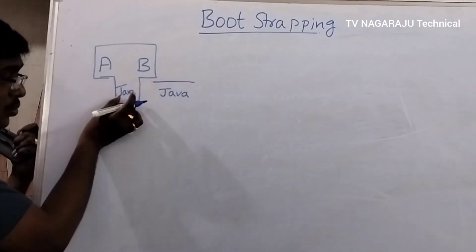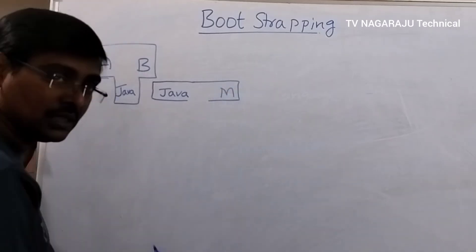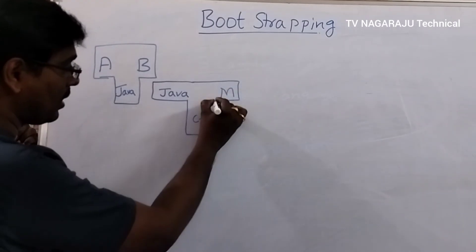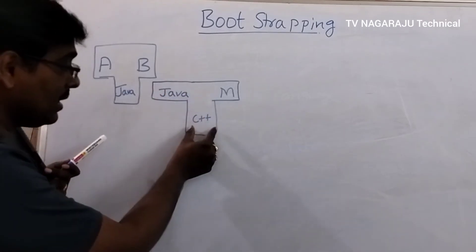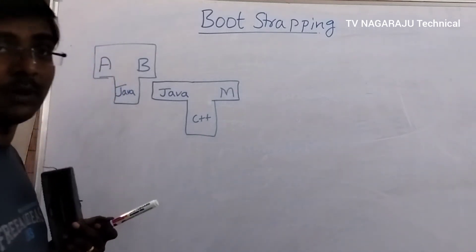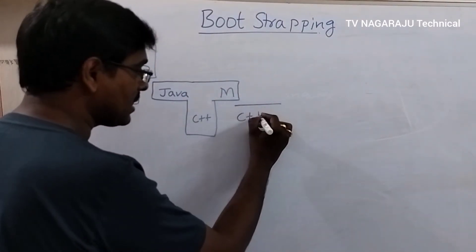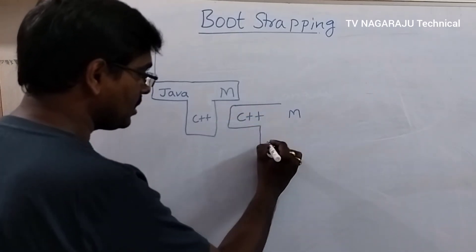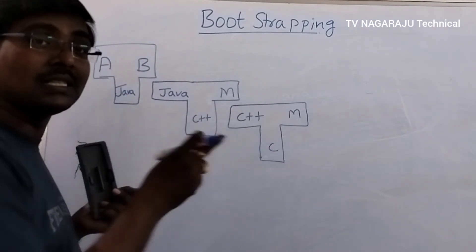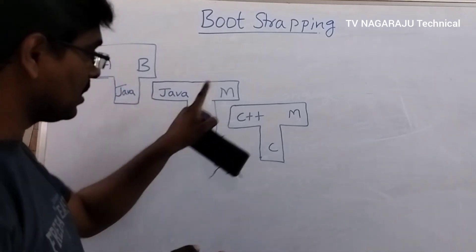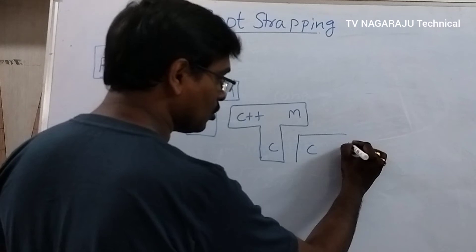The implemented language Java acts as the source language, and assume M is the target machine language. The compiler for Java is itself implemented using C++. Even though C++ is not directly understandable by the computer, C++ then acts as the source language. So Java is converted to C++, and C++ is converted to C, and in the same fashion you can continue up to any level.